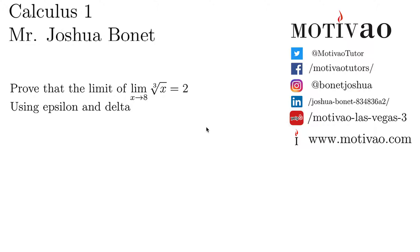So first we want to write down the epsilon and delta definition. It says if 0 is less than absolute value of x minus c, in this case c is 8, is less than delta, then absolute value of f of x, in this case cube root of x minus l which is 2, is less than epsilon.